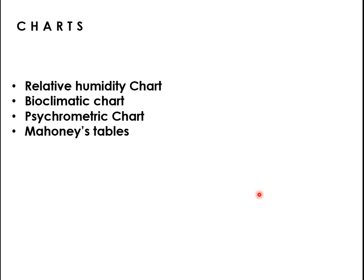We will now look at some charts for finding thermal comfort and doing calculations. There are four charts: the relative humidity chart, the bioclimatic chart, the psychrometric chart, and Mahoney's tables. These allow you to plot temperature and humidity points to find the thermal comfort zone and determine how many hours are comfortable in a certain climatic zone.